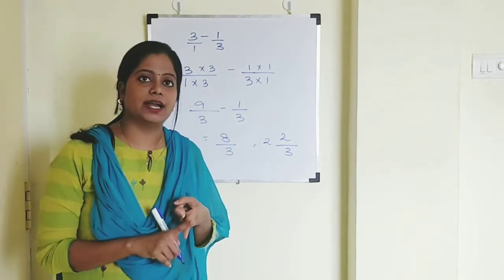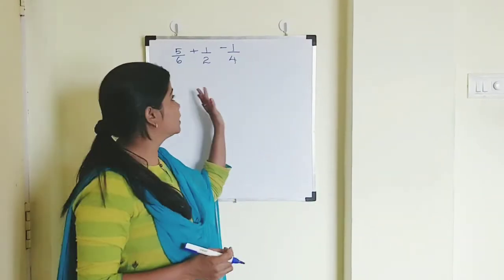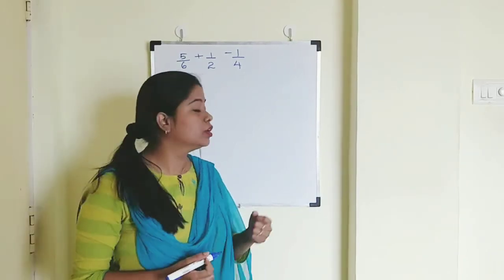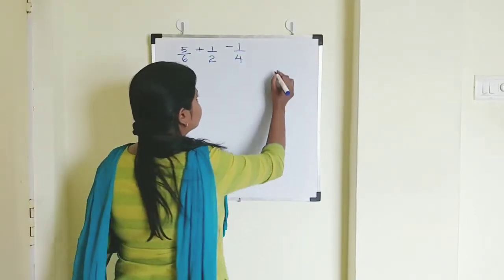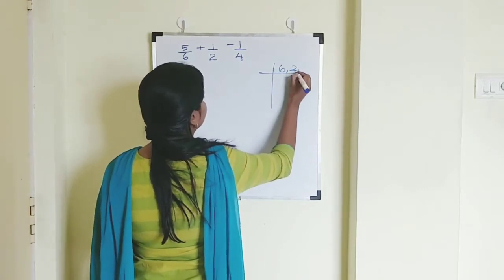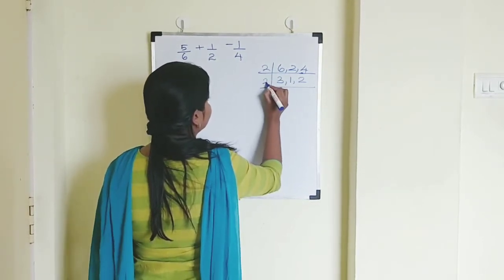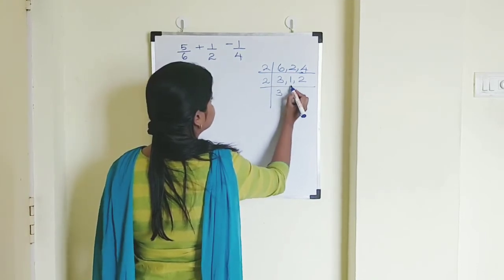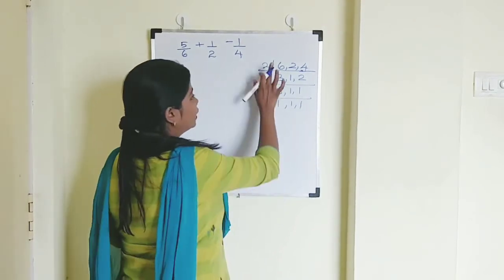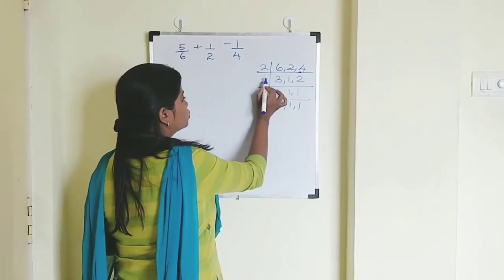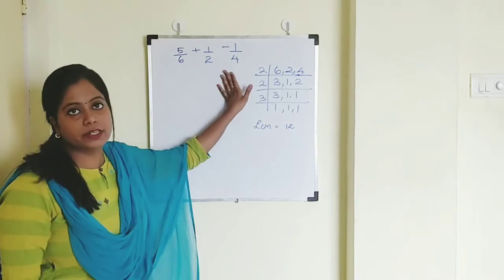Now let's see one more sum which contains both addition and subtraction of fractions. The denominators are 6, 2, and 4 — all different — so we need to find the LCM. Taking 2: 2 threes are 6, 2 ones are 2, 2 twos are 4. Taking 2 again: 3 stays as is, 1 stays, 2 divided by 2 is 1. Then 3 ones are 3. Multiply: 2 twos are 4, 4 threes are 12. So the LCM is 12.